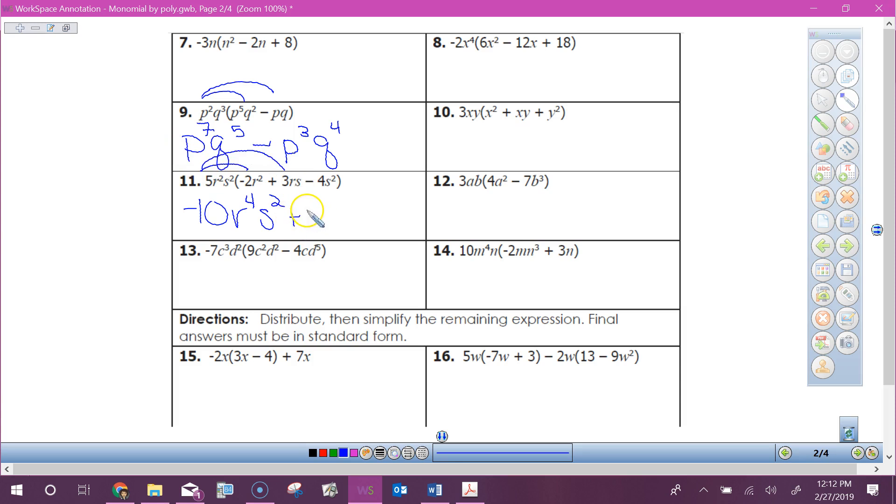Plus 15r to the third s squared. And then I multiply that third part. What's the sign going to be? Minus. Minus 20r squared. Not so shabby, right?